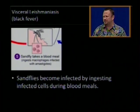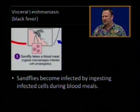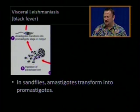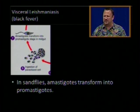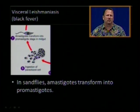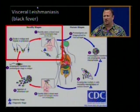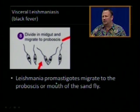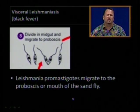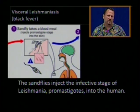Sandflies become infected by ingesting infected cells during blood meals. In the sandfly, the amastigotes transform back into promastigotes — released from the macrophage, they transform in the sandfly's gut into promastigotes. The leishmania promastigotes then migrate to the proboscis of the sandfly to be injected back into the human.